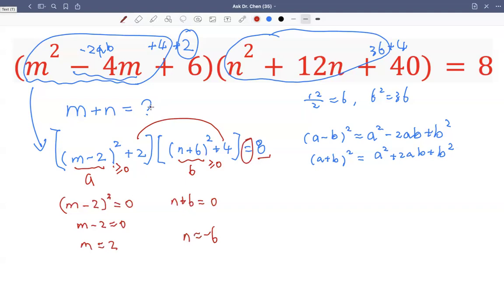So then m plus n, which is 2 plus negative 6, which is negative 4.